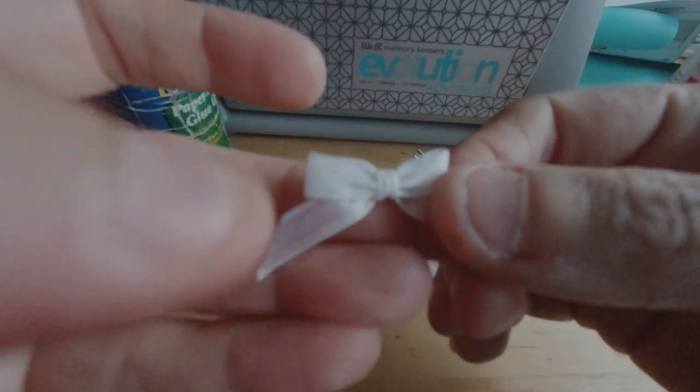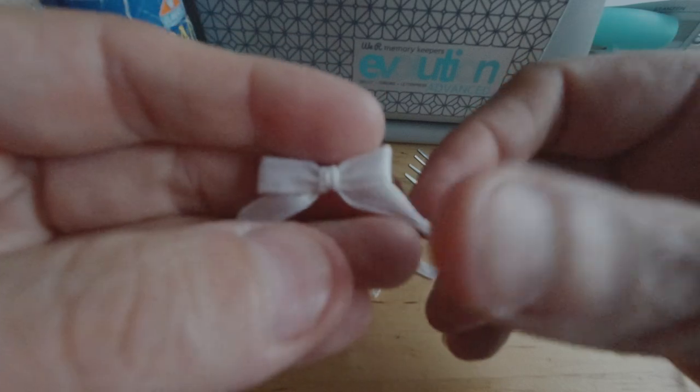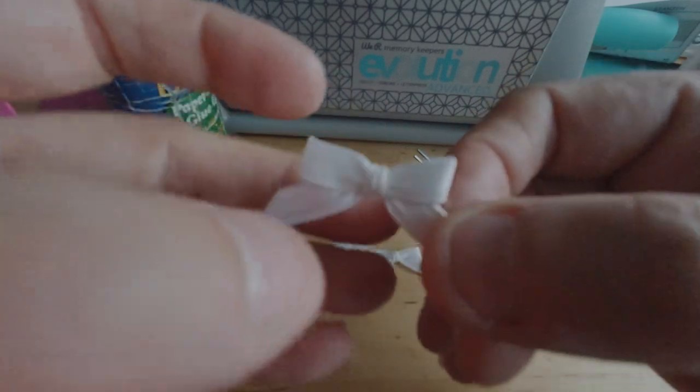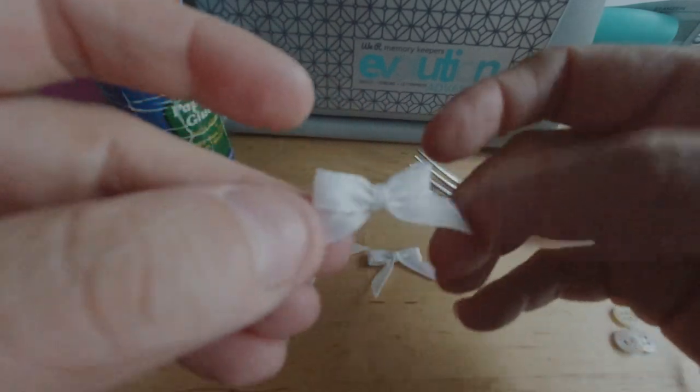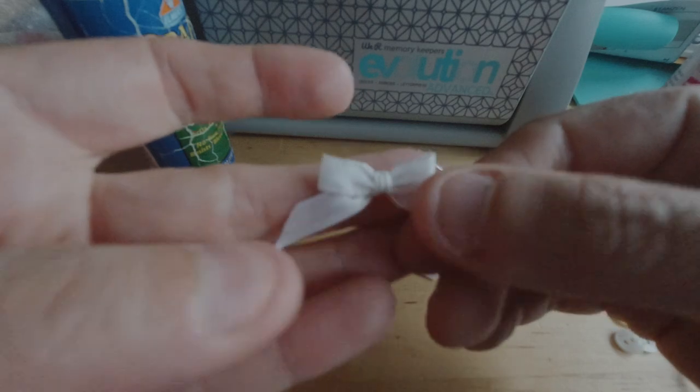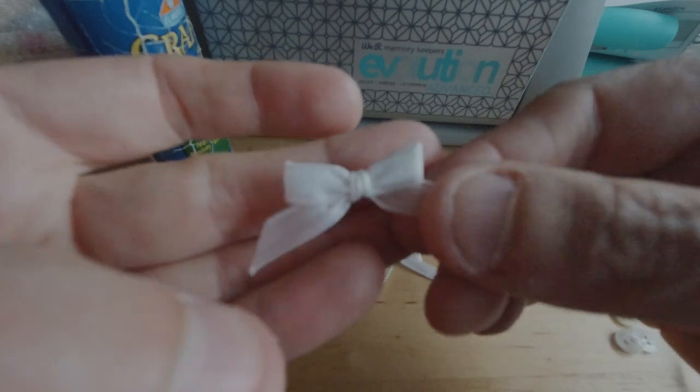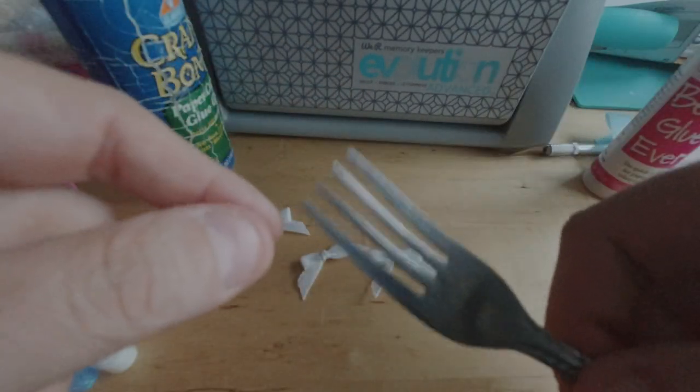It's called a fork bow because you make it with a fork. I do these whenever I need really precise bows for doll making or cards. As you can see, it just makes a nice little bow, and you size it with a fork.